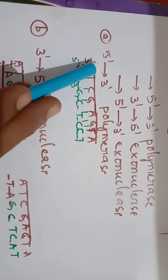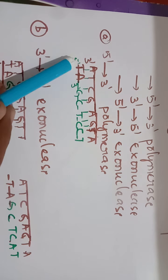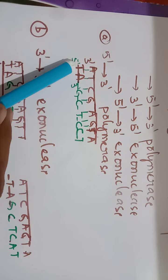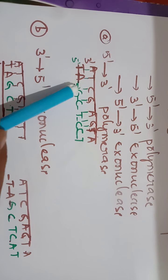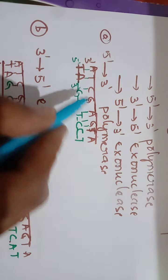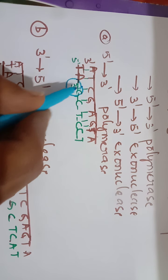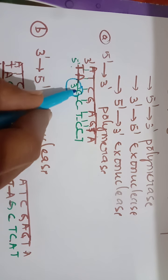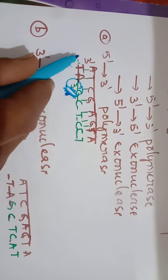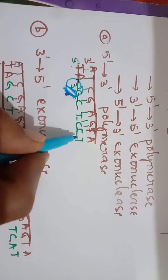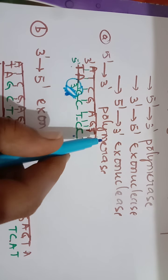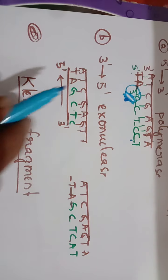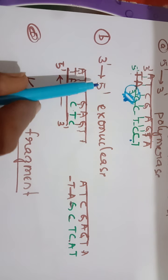The 5 prime to 3 prime polymerase activity means nucleotides are added at the 3 prime end of the DNA. This is very important — in many entrance exams they ask where DNA nucleotides are added by DNA polymerase. The answer is at the 3 prime end, so it synthesizes in the 5 prime to 3 prime direction.